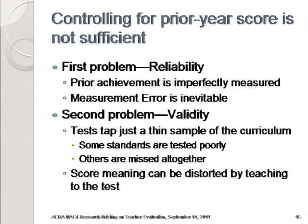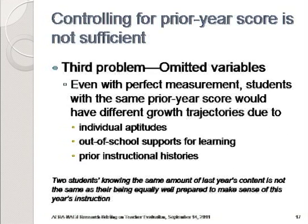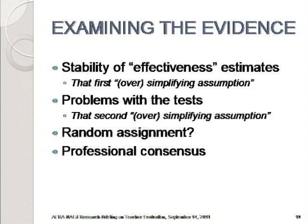The main point here is that controlling for prior year scores is not sufficient. Test scores are fuzzy — they fluctuate, they fail to pick up a lot of important learning, and they're affected by sources of invalidity like drilling kids and test-wiseness strategies. In addition, just because students had the same score last year, or even the same score as the past couple of years, doesn't mean they're on the same trajectory. Even if two students had identical mastery over last year's content, they would not necessarily have the same preparation for learning this year's content. Up until now, I've focused on the logic of value-added models and raised some questions.